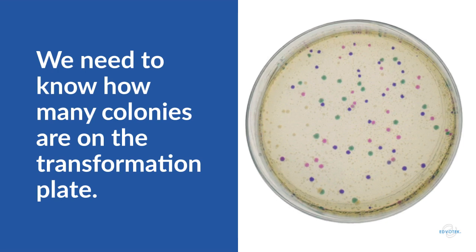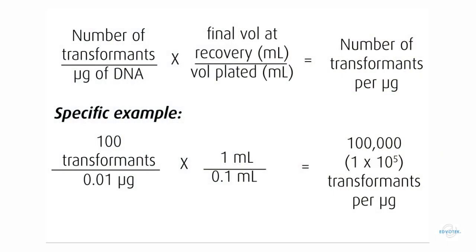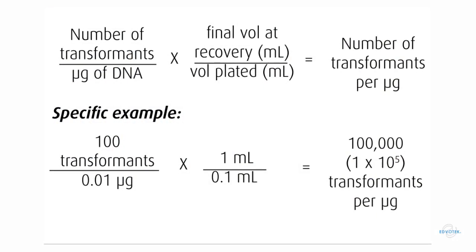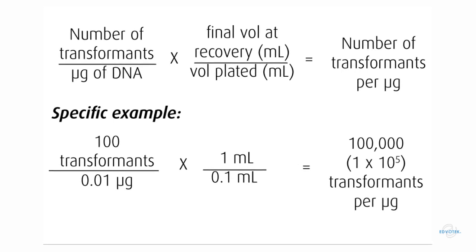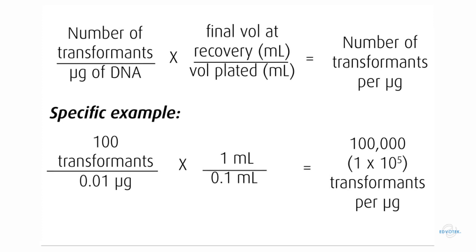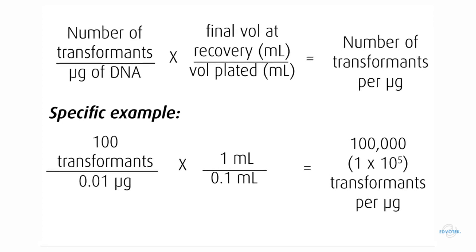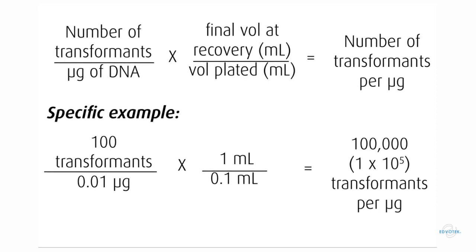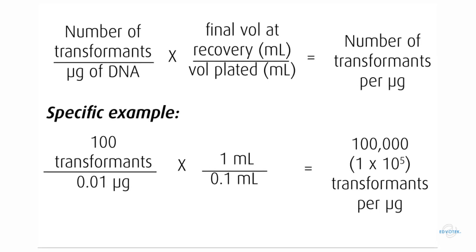We can then use this data to calculate the transformation efficiency. If 10 nanograms, or 0.01 microgram of plasmid, were used to transform 1 milliliter of cells, and plating 0.1 milliliter of this mixture gives rise to 100 colonies, then there must have been 1,000 bacteria in the 1 milliliter mixture. Dividing 1,000 transformants by 0.01 microgram of DNA means that the transformation efficiency would be 1 × 10⁵ cells transformed per microgram of plasmid DNA.